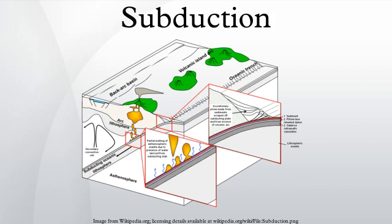Subduction zones dive down into the mantle beneath 55,000 kilometers of convergent plate margins, almost equal to the cumulative 60,000 kilometers of mid-ocean ridges.